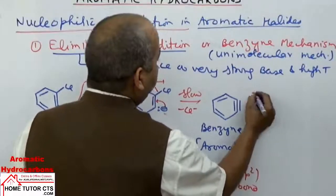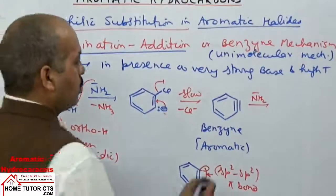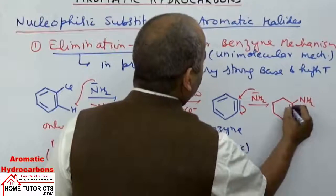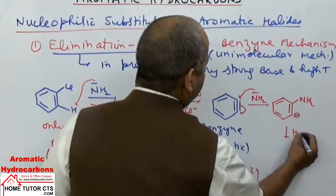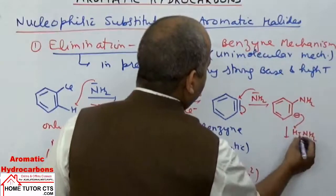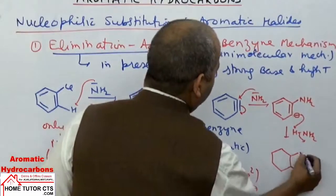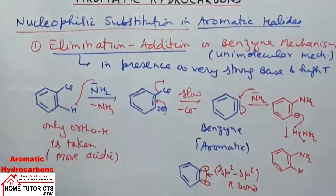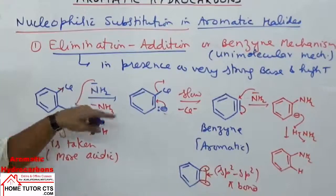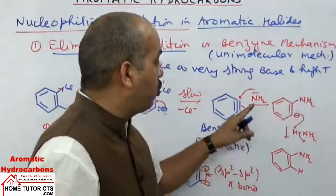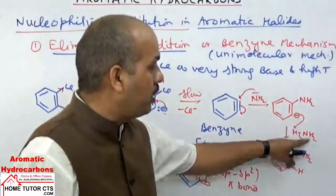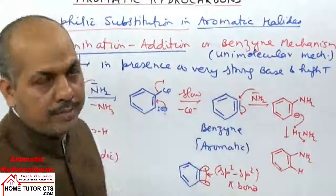Next, the NH2 negative ion attacks the benzyne intermediate. Since alkynes are more reactive than alkenes, the attack occurs at the alkyne bond. Then the carbanion takes a hydrogen from an ammonia molecule to give the reaction product. When the NH2 group is introduced, it has a +I (electron-donating) effect, making the adjacent position more basic, which takes hydrogen from ammonia while losing the NH2 negative ion.